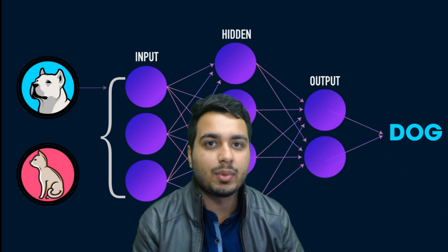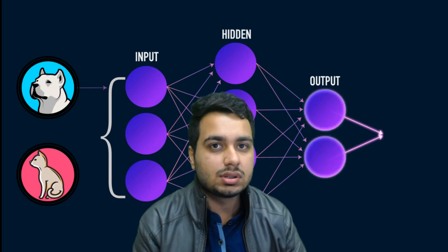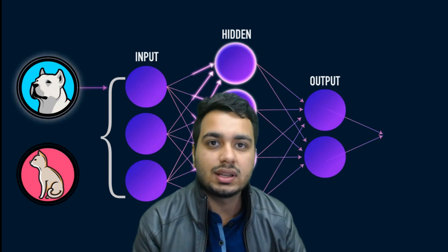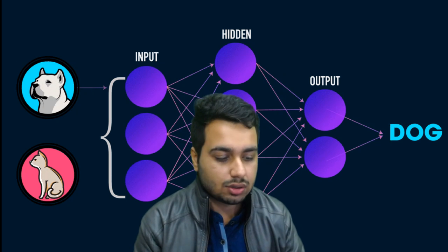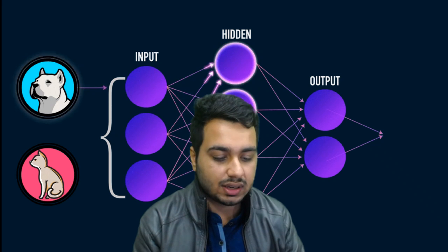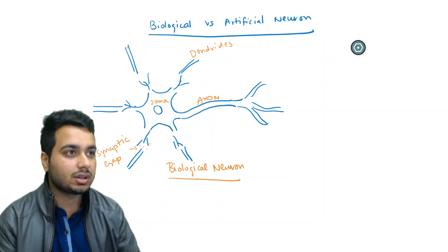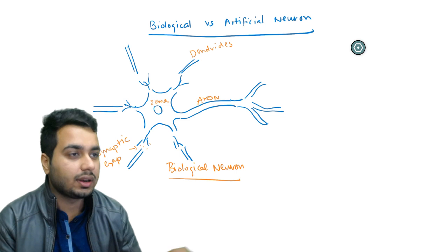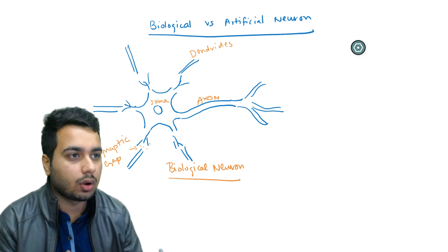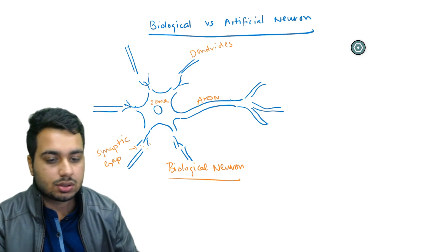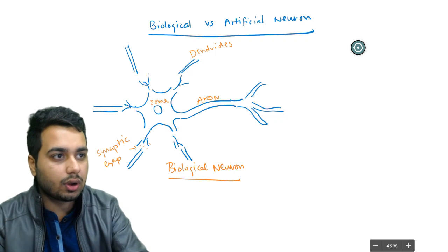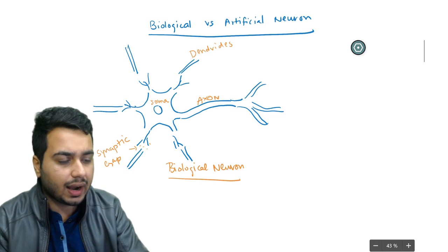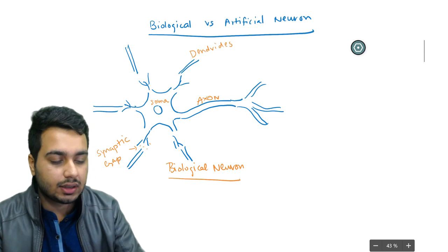Google, Amazon, and others nowadays use deep learning which is based upon these neural networks. So let us start the series and first understand how a neural network is related to a biological neuron. The structure drawn here is of a biological neuron.